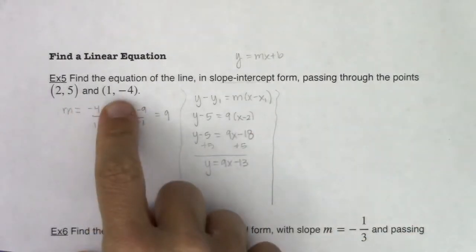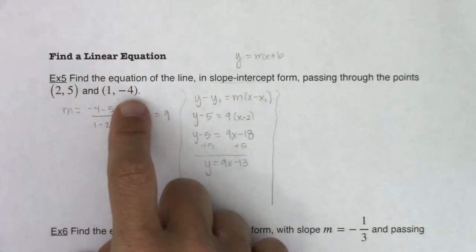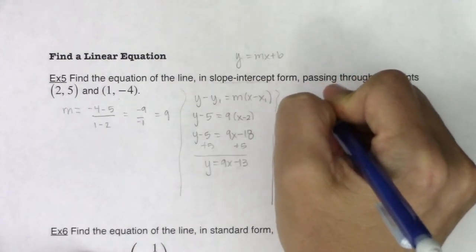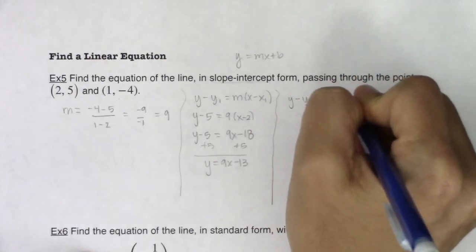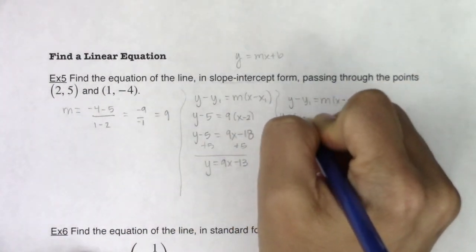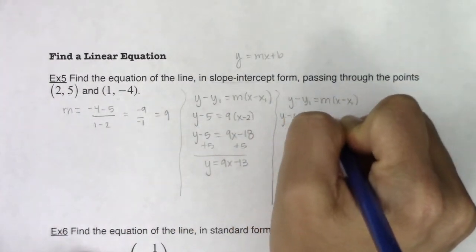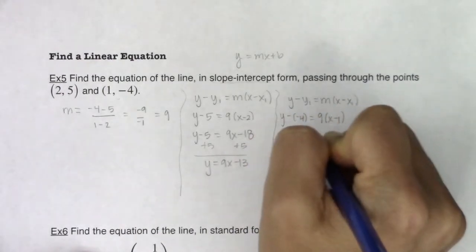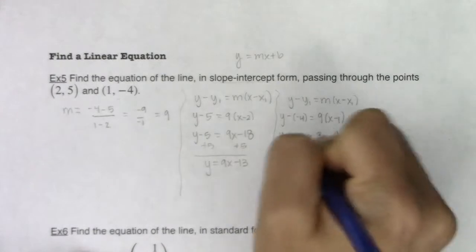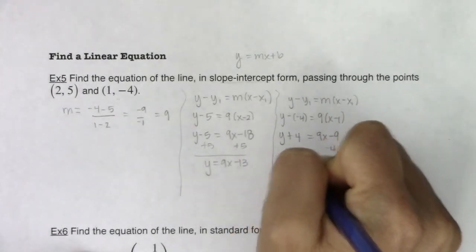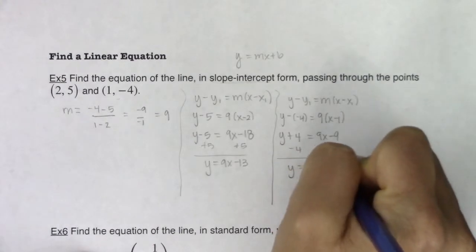Since we're going through this, I want to practice just to show you that the same answer pops up if you use (1, -4). So if I went through this, y - y₁ = m(x - x₁). But I'm using these coordinates. I would have y - (-4) equaling 9 times (x - 1). So I have y + 4 = 9x - 9. Subtract 4 from both sides, and I'm still going to get y = 9x - 13. Great.